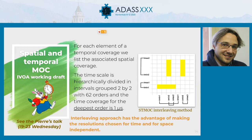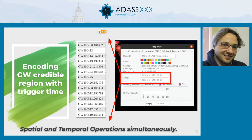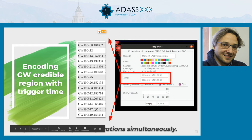The space-time MOC will be described in detail in the next talk. Briefly, the method is based on discretization of the space and time dimensions. The time coverage at the finest order is one microsecond, and this system is very interesting for deep investigation in multi-messenger applications. We can encode GW credible regions together with the trigger time to perform space-time operations simultaneously. The Aladin user interface is very user-friendly — you just need to copy the trigger time from the header and paste it in the property window.